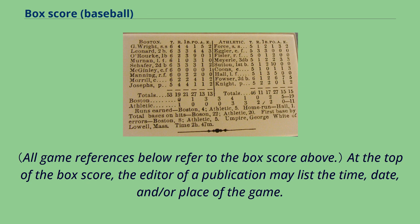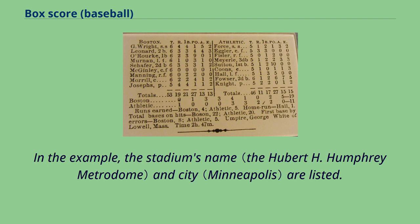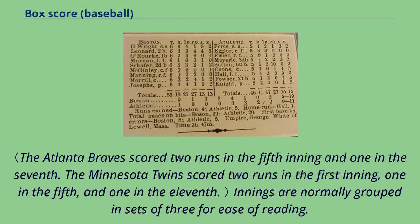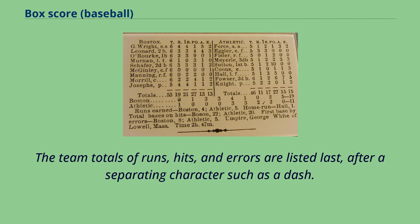At the top of the box score, the editor of a publication may list the time, date, and/or place of the game. In the example, the stadium's name and city are listed. The line score is always listed as part of the box score, usually near the top. It lists the total runs scored in each inning. Innings are normally grouped in sets of three for ease of reading. The team totals of runs, hits, and errors are listed last, after a separating character such as a dash.